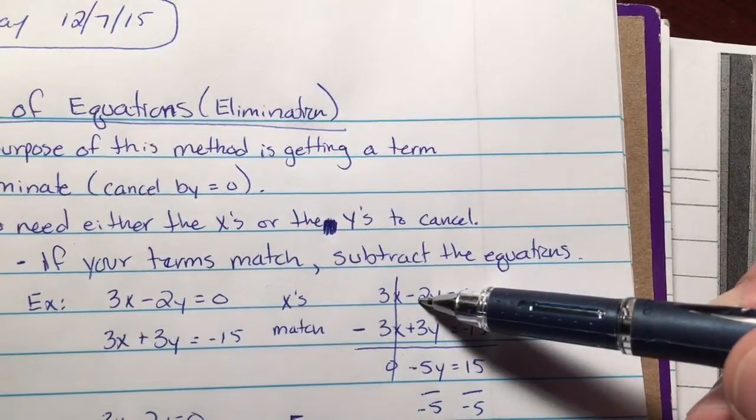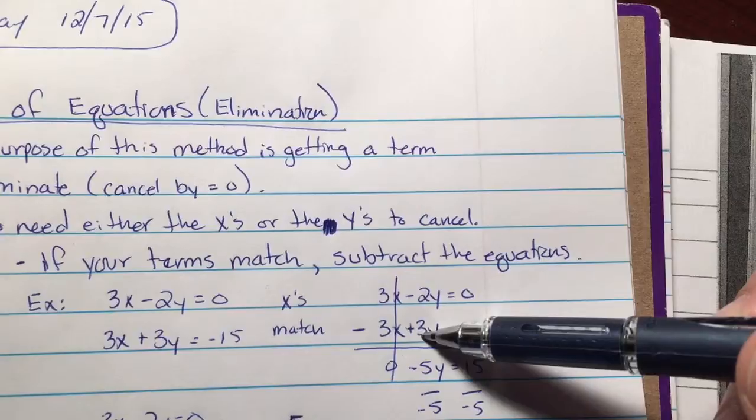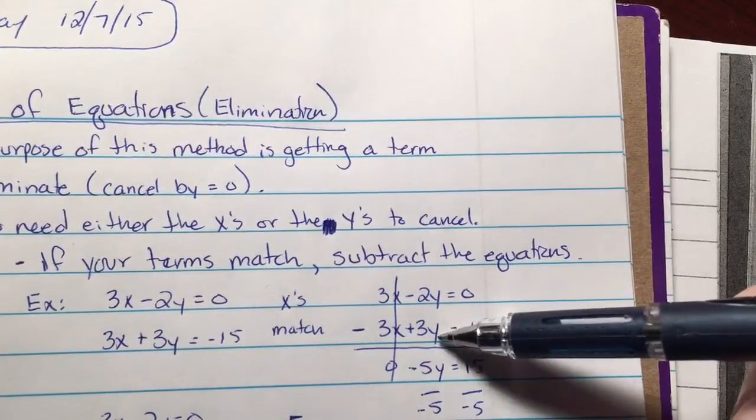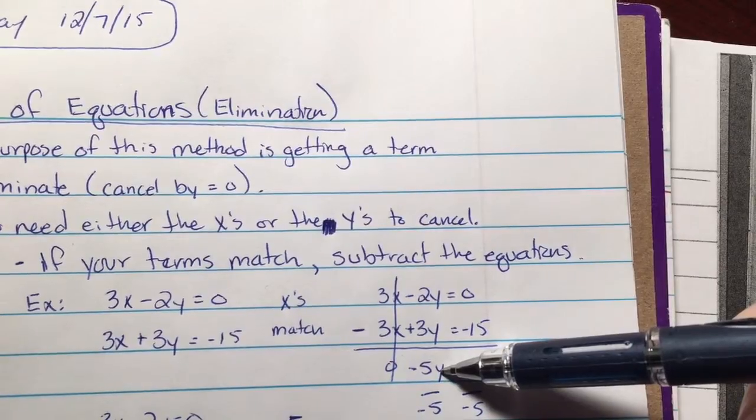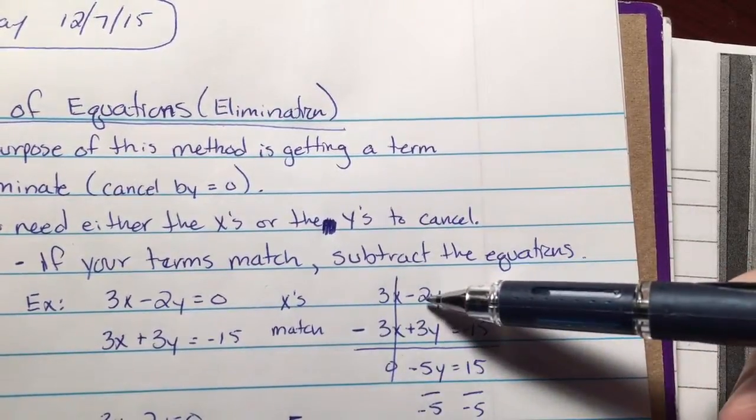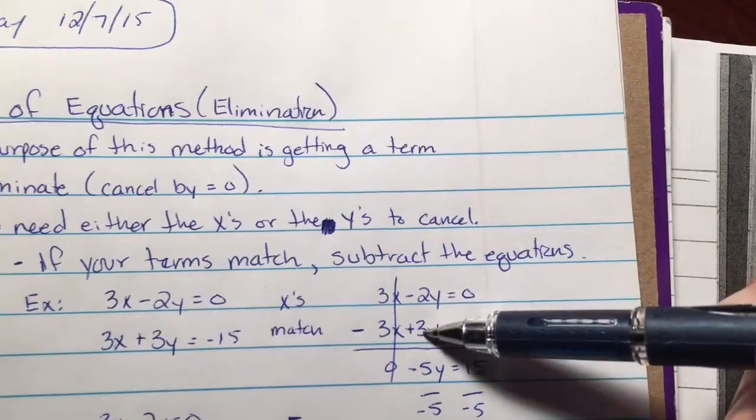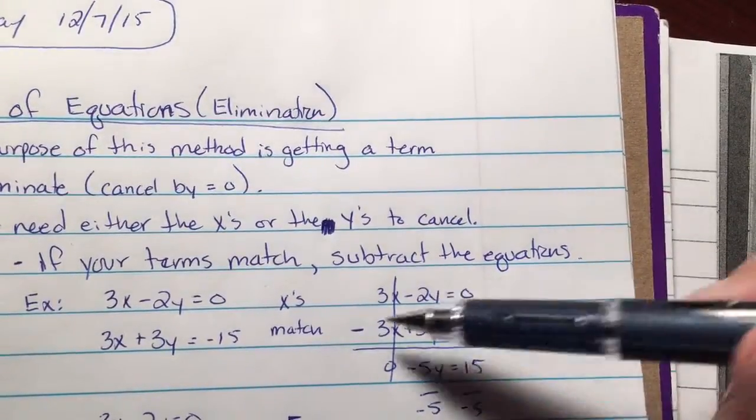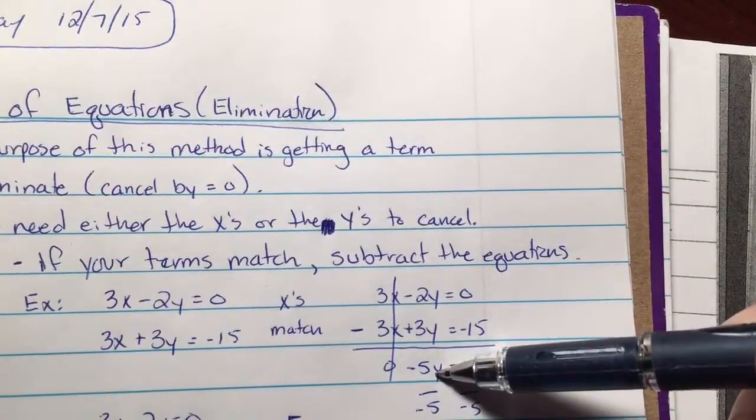Negative 2 minus 3. Again, negative 2y minus 3y makes negative 5y. You've got to be real careful, don't forget about that minus sign. A lot of people are going to look at this and say negative 2 plus 3. No. Don't forget, you're subtracting them. Negative 2y minus 3y, negative 5y.